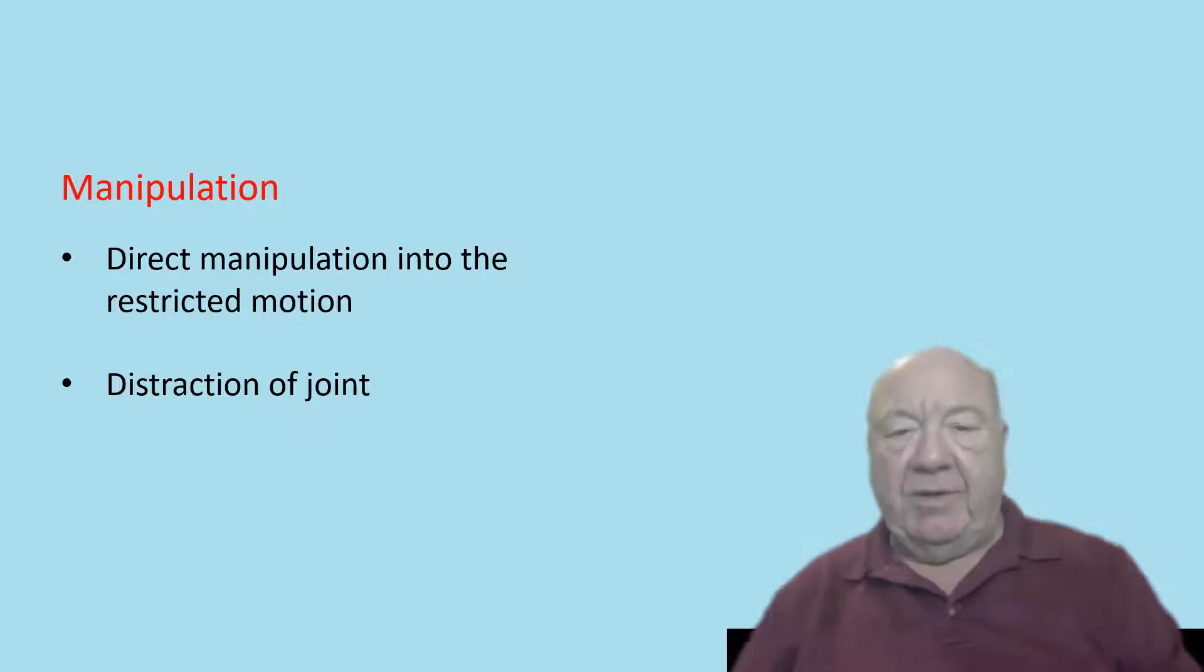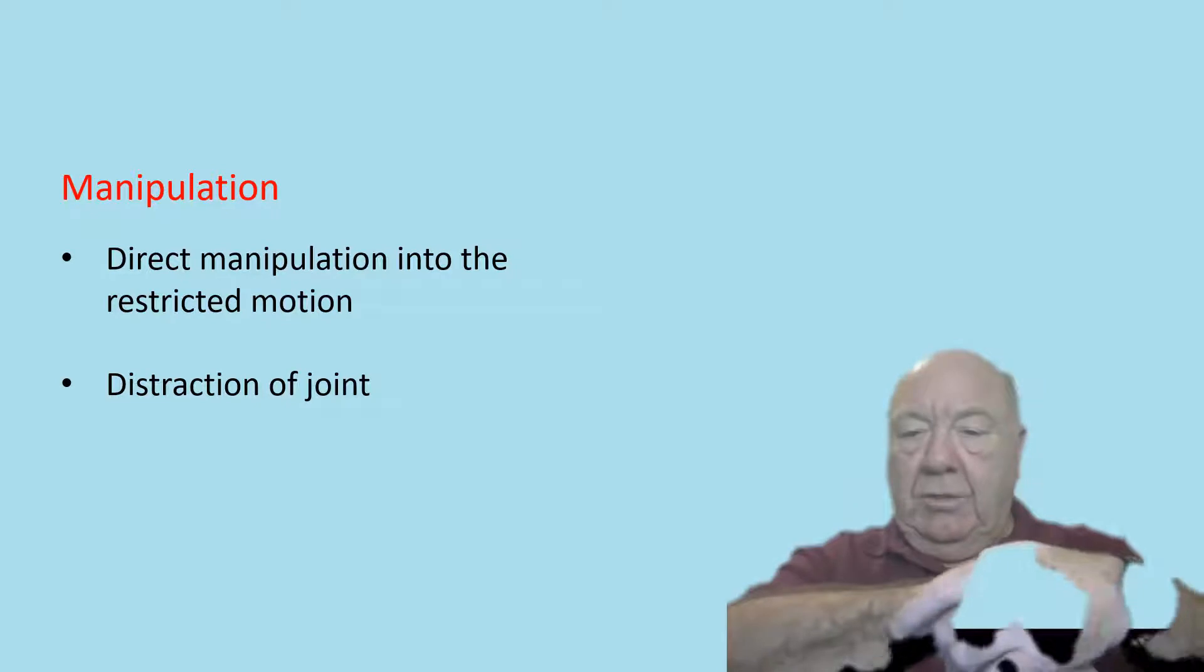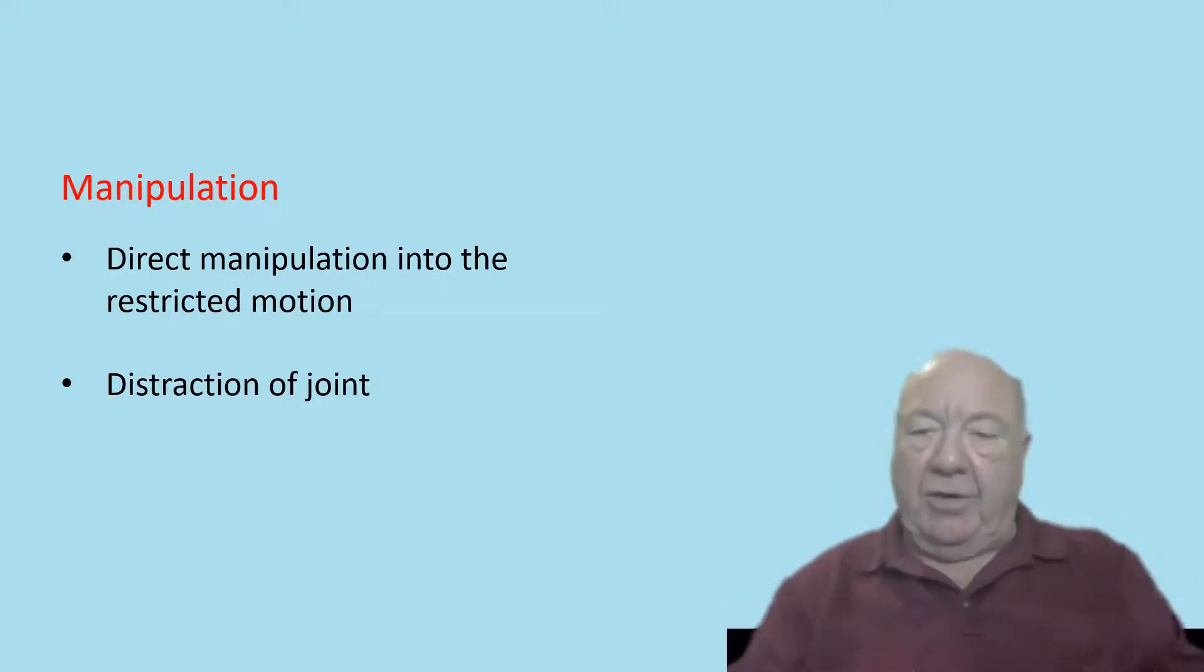We're not talking about loose body manipulations but subluxation manipulations. So we can either directly manipulate the restricted motion. For example, a carpal that's gone dorsal, we can basically thrust it palmer. Now this is generally done under distraction.